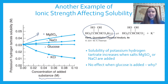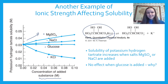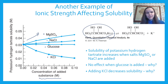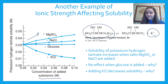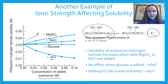When glucose is added, there's no effect. The reason is that glucose has no charge — it's a neutral molecule, and therefore it can't change the net charge if it diffuses into the ionic atmosphere. KCl decreases the solubility of potassium hydrogen tartrate because potassium is a product of its dissolution. Adding more K⁺ from KCl is the common ion effect, which is a form of Le Chatelier's principle.